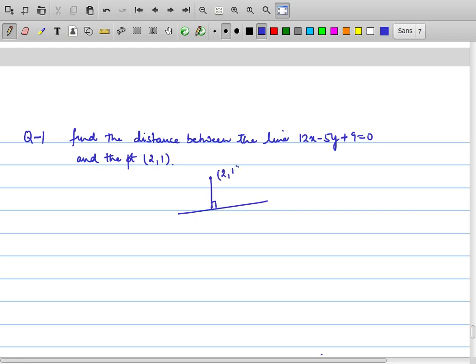This is (2,1) and this is 12x minus 5y plus 9 equals 0. According to our formula, step 1: bring all the terms of the line on one side, and since they are on one side we don't have to do anything. Step 2: substitute these coordinates in place of x and y. So in place of x we will substitute 2, in place of y we will substitute 1. Therefore we get 12 into 2 minus 5 into 1 plus 9.